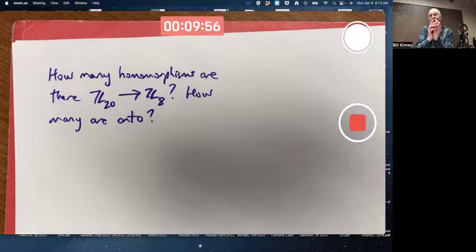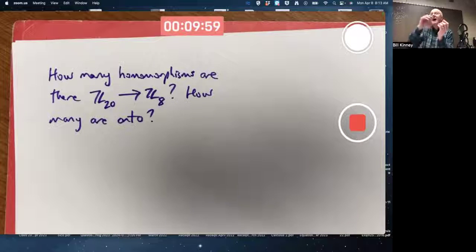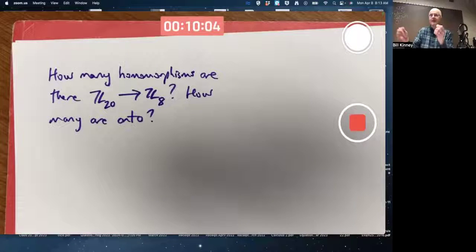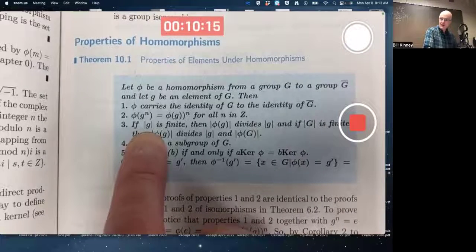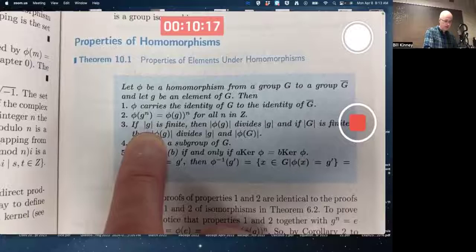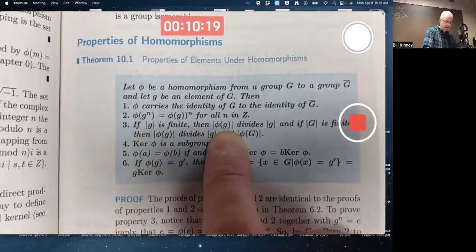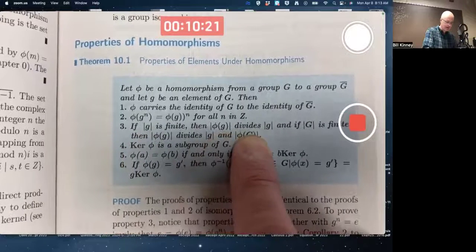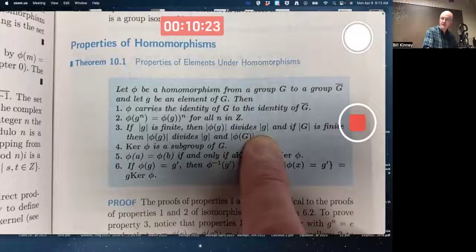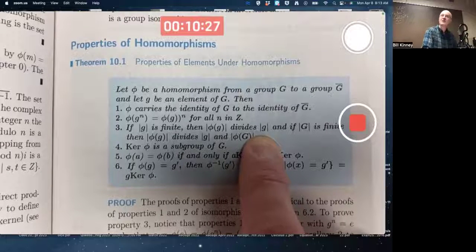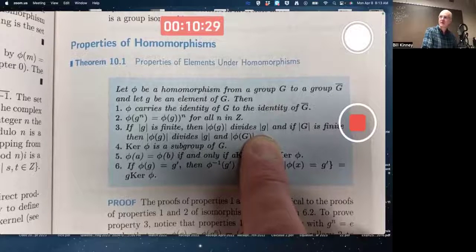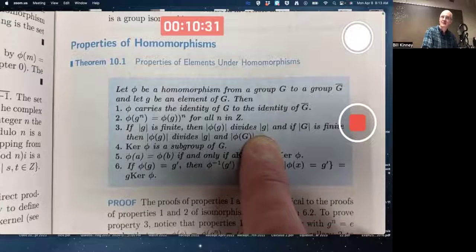But more precisely, you also get something that has an order that divides the order of the original element. That's one of the theorems. If the order of your element that you're plugging in to the homomorphism is finite, then the order of its image divides the order of the original element. That's something you want to just know intuitively because you've thought about it so much.